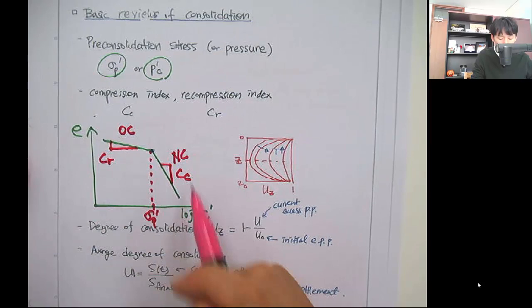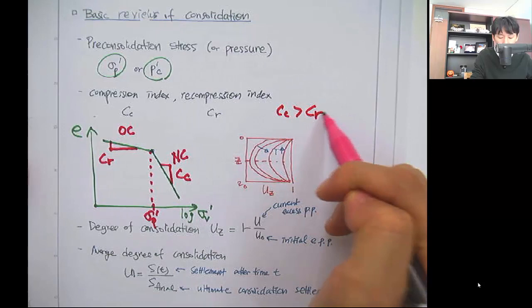As you can see, the slope in the normally consolidated region is much larger than C_R. So C_C is typically much larger than C_R.